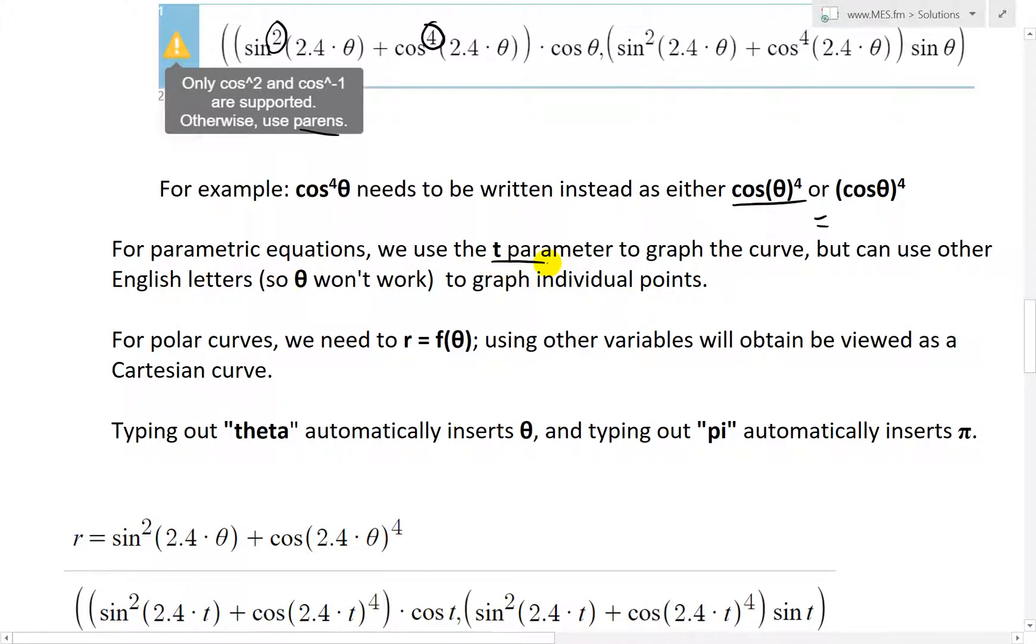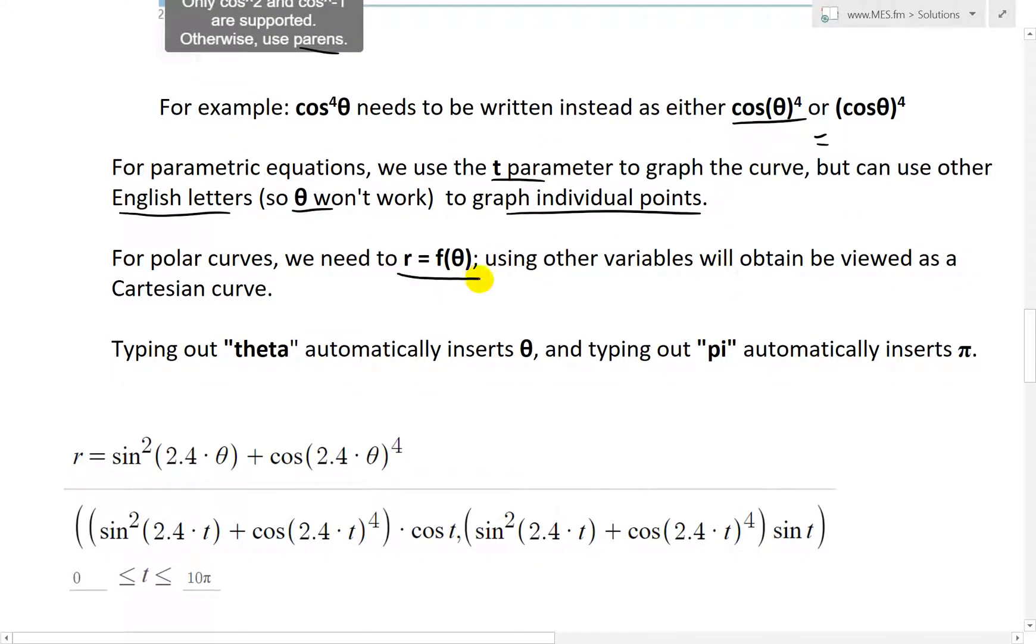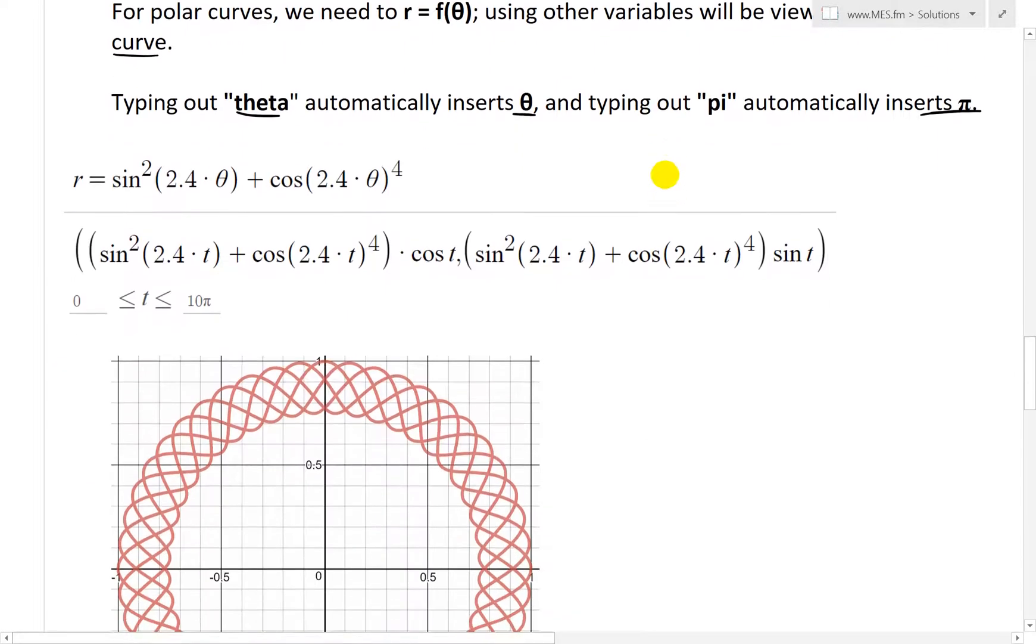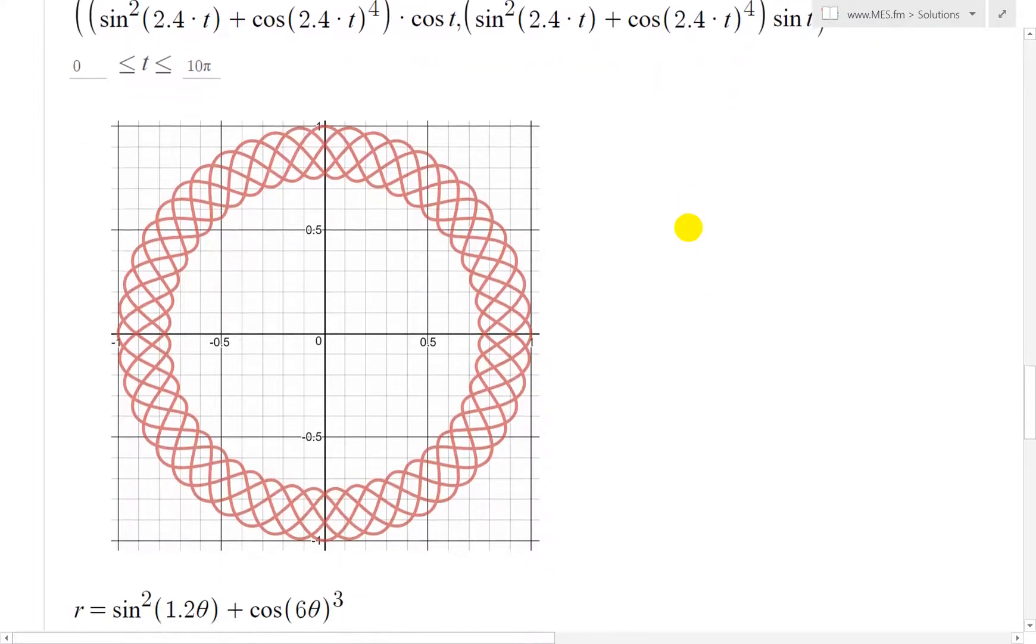Also, for parametric equations, we use the T parameter to graph the curve, but can use other English letters like A, B, C, et cetera, to graph individual points. It needs to be English, so you can't use theta. For polar curves, you need to write this as R equals F of theta. Using other variables will be viewed as a Cartesian curve. If you type out theta, it automatically inserts theta. And typing out pi automatically inserts the symbol pi.